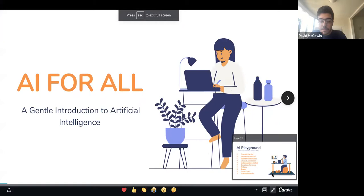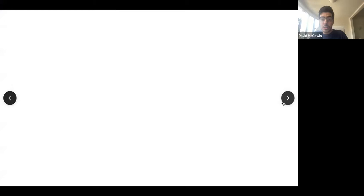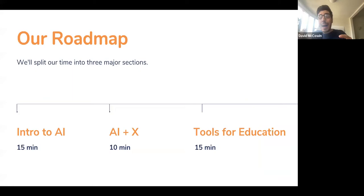Okay, AI for all — a gentle introduction to artificial intelligence. First, our roadmap. We might go a bit over these times, but this is rough. I'm going to talk about introduction to AI — what it is, how to use it ethically. Then we'll spend some time talking about applications of AI: AI plus X, where X could be environmental studies, medicine, economy, or whatever you're interested in. And finally, tools for education. I have so many resources to share and give you a glimpse of what's out there if you want to educate yourself about AI.